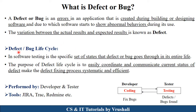There is a defect lifecycle. This lifecycle displays a set of states through which defects go during their entire life. The main purpose of the defect lifecycle is to find all the defects or errors in your project and fix those defects systematically and efficiently.